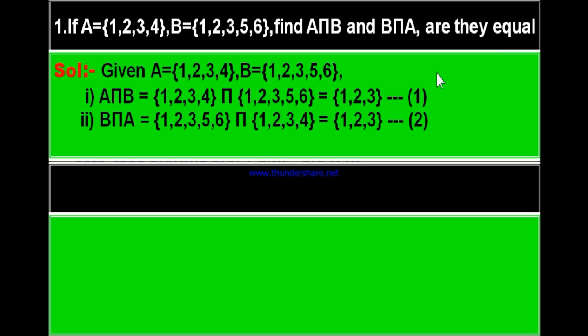Then are they equal? From results 1 and 2 you can find that A intersection B is equal to B intersection A — both are equal.